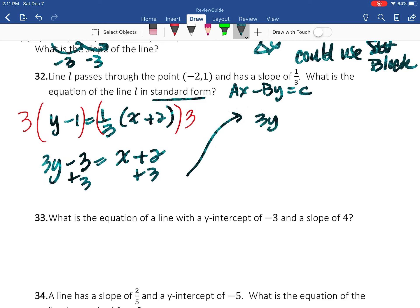That's going to give me 3y = x + 5. And then I need to move my x over. So then that becomes -x + 3y = 5.